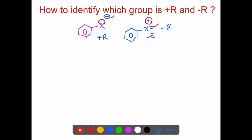Example one: OR or alkoxy group. Alkoxy is one equal — is this group plus R or minus R? The first atom attached to benzene — checking the first atom — oxygen has a lone pair. So this is a plus R group.